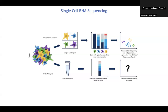Single cell RNA sequencing is a method for determining the RNA expression profile of individual cells in a given cell population. This can be very useful for answering a number of biological questions. For example, single cell RNA-seq is commonly used to classify cell types in a mixed population of cells and can uncover rare or previously uncategorized cell types, because that signal would have been overwhelmed in a heterogeneous cell population.